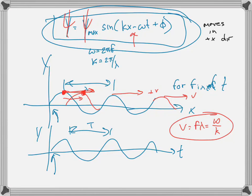There are two velocities we're talking about here: the wave velocity, which is how fast the peaks move along, and also the velocity of a point on the wave, which is called the transverse velocity. That's because it's transverse to the motion of the wave. The wave moves in the x direction, but each point on the wave also moves up and down — that's the simple harmonic motion velocity.